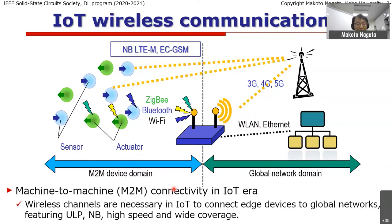Machine-to-machine connectivity is a very important keyword. Without any support from human beings, machines can connect to other machines automatically and work autonomously. Wireless channels are very much needed, with different types: ultra-low power, narrow band, high speed, and wide coverage. The technologies and systems are well developed to establish these connectivities.